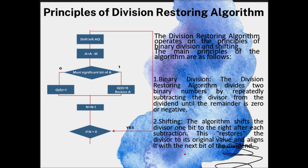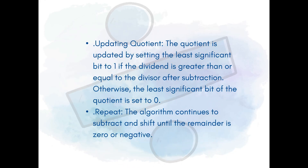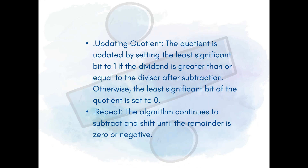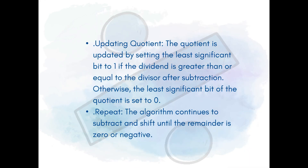The principles of the Division Restoring Algorithm are as follows. First, binary division: the algorithm divides two binary numbers by repeatedly subtracting the divisor from the dividend until the remainder is zero or negative. Second, shifting: the algorithm shifts the divisor one bit to the right after each subtraction, restoring it to its original value and aligning it with the next bit of the dividend. Third, updating the quotient: the least significant bit is set to 1 if the dividend is greater than or equal to the divisor after subtraction; otherwise it is set to zero. Finally, the algorithm continues to subtract and shift until the remainder is zero or negative.